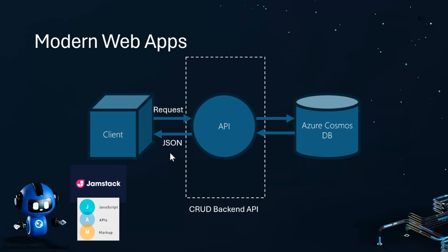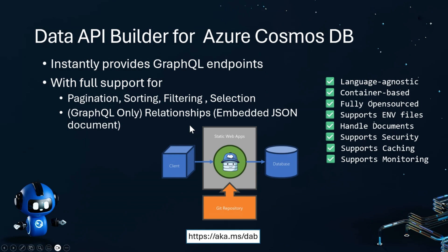Let's explore more about Data API Builder with Azure Cosmos DB. With Data API Builder, you can turn your collections in the database into a GraphQL endpoint. For every object that you expose via Data API Builder, it supports pagination, sorting, filtering, and even navigation between relationships when you are modeling your data in an embedded format. It really gives you full access to the power of your database using modern endpoints and modern protocols. You can use the GraphQL endpoint with applications built using any language or framework, and it can be used on any device or platform. Data API Builder is stateless and completely open source — you are welcome to contribute.